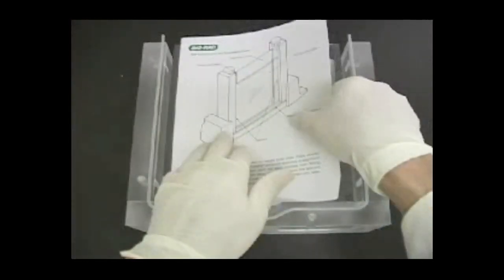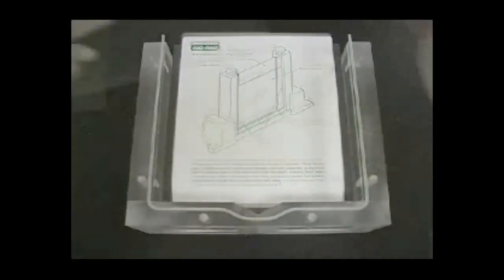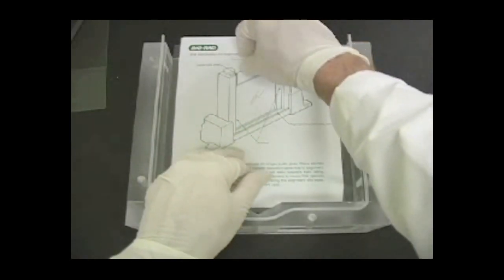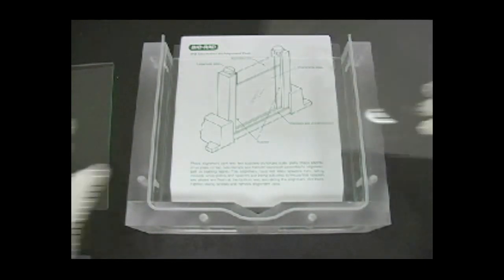Insert an alignment card between the spacers. Place a short inner plate on top of the spacers, then place a separation sheet on top of the short plate.